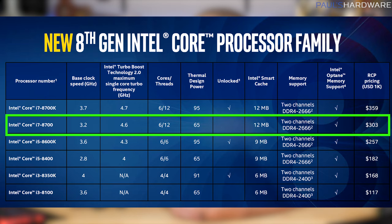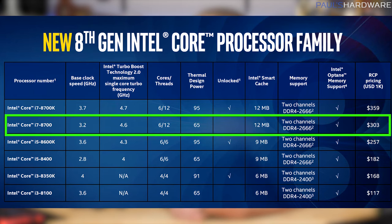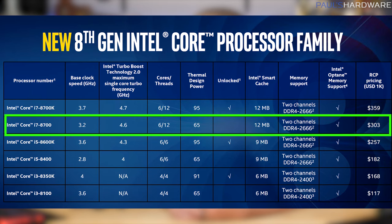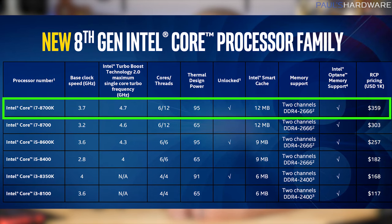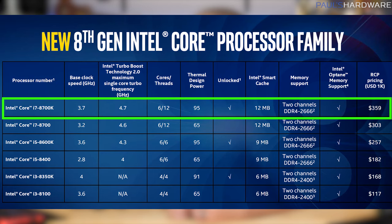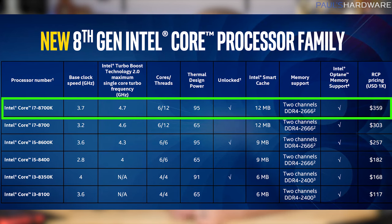Next is the i7-8700, where with the i7s you get hyper-threading, so 6 cores and 12 threads, only a 65W TDP on this one, and a 4.6GHz boost, making it a very viable option for those not looking to overclock. And finally at the top, the i7-8700K: 3.7GHz base, 4.7GHz boost, 6 cores, 12 threads, 95W TDP, 12MB of cache, and a bulk price of $359, so I'm expecting this one to be probably closer to $400.